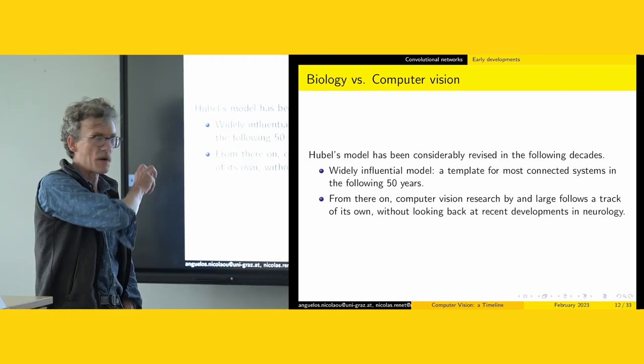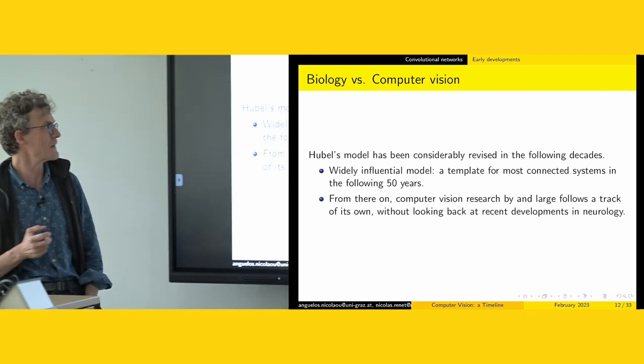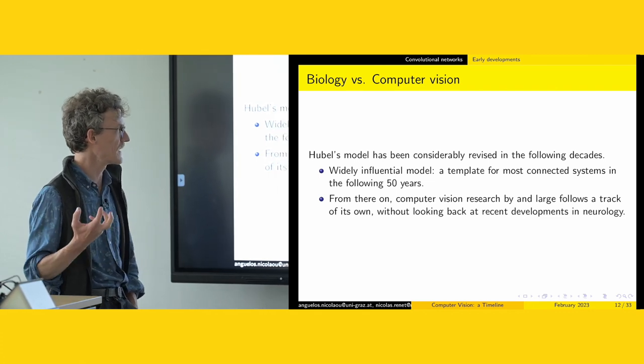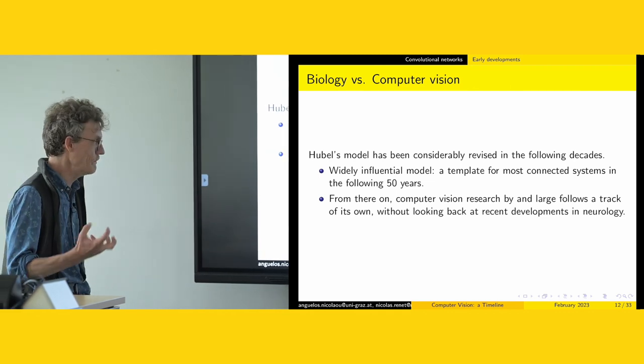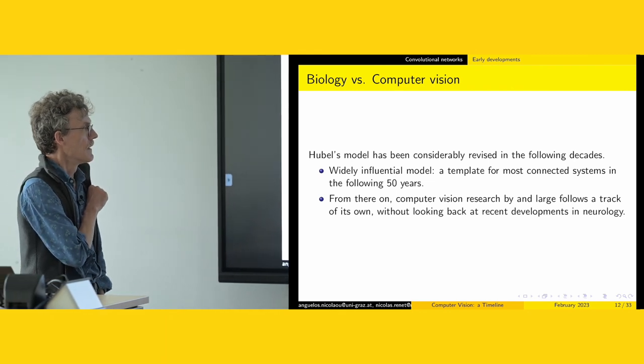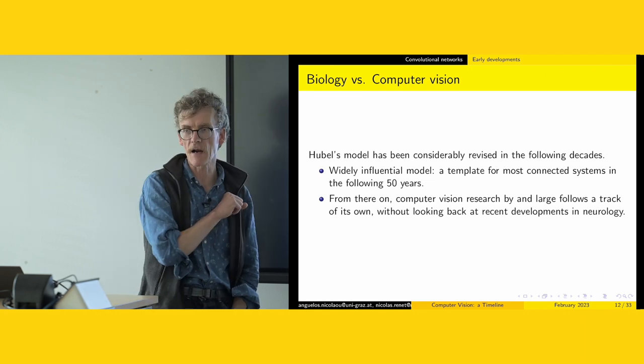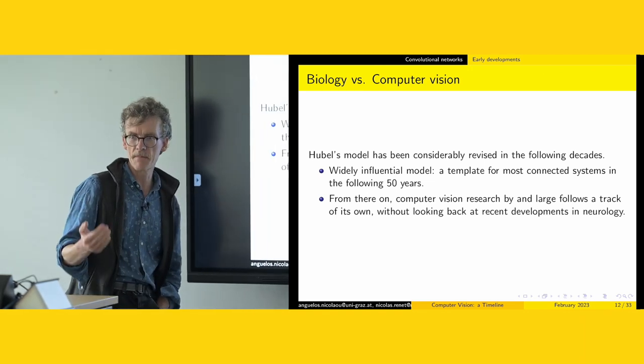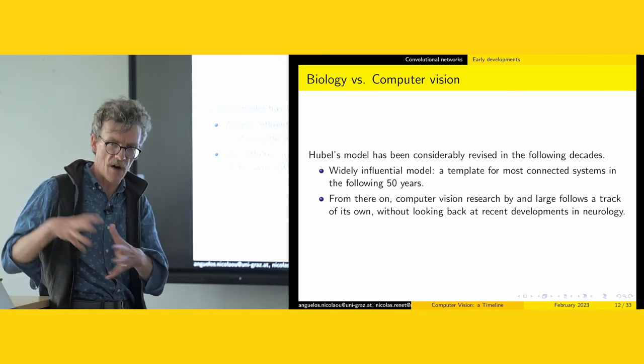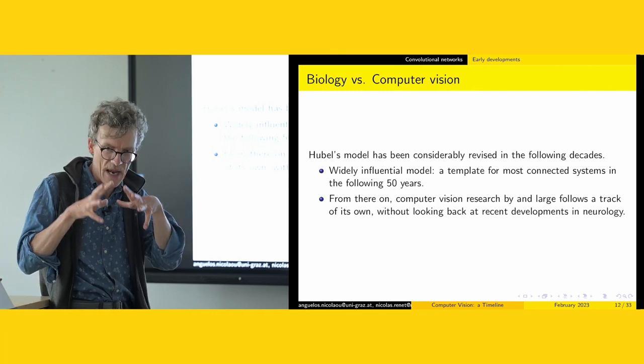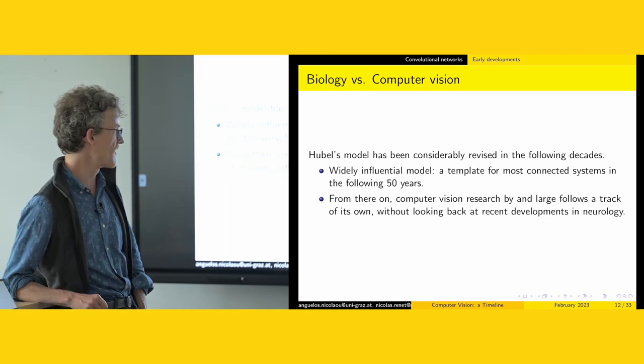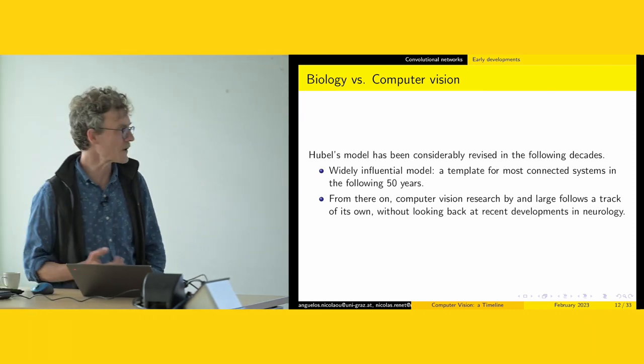The hypothesis made by Hubel was that you had two layers of cells. The first layer is made of simple cells that capture very elementary features. Then a second layer would aggregate those simple features into more complex features. These higher-level cells synthesize composite patterns. This is the key idea that will allow connectionist architectures to go beyond the perceptron, where you did not have this idea of higher-level cells that would transform inputs into another collection that would capture more information. Hubel's model has been revised considerably but has been a template for most connected systems in the following 50 years. From that point on, computer vision research followed a track of its own.